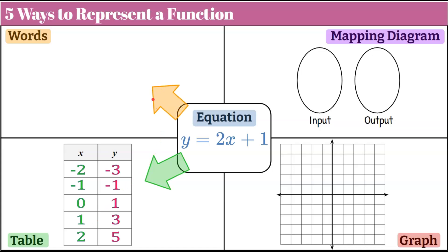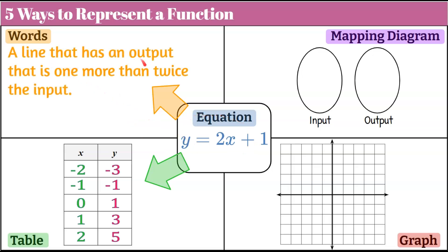The next thing we want to do is write it in words. This equation represents a line. We have a line that has an output that is 1 more than twice the input. So here's my output: it is 1 more than twice the input.